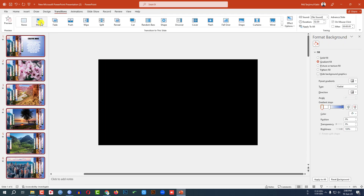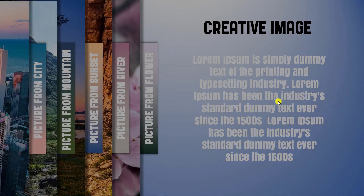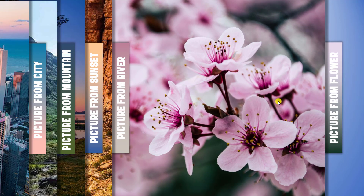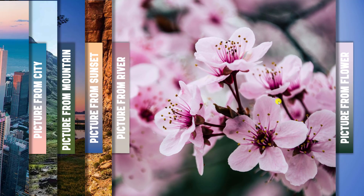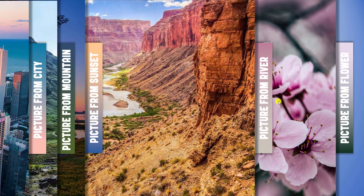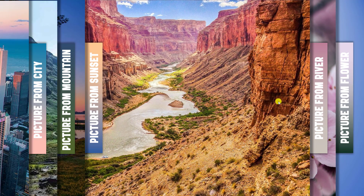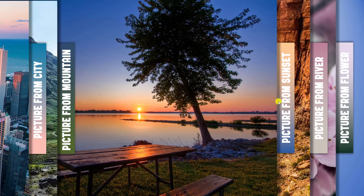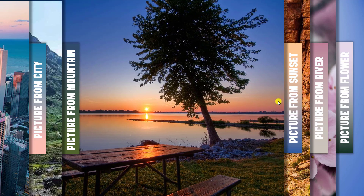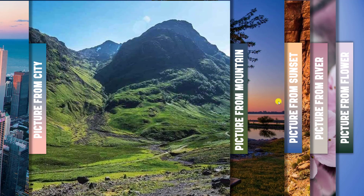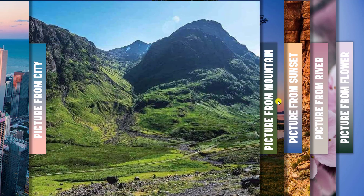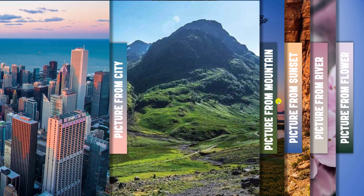Then select all of the slides, go to Transition, and click on Morph. Go back to the first slide — perfect, perfect, perfect, this is also perfect.